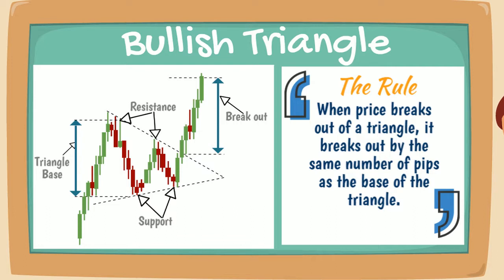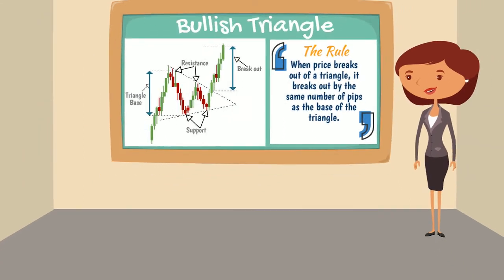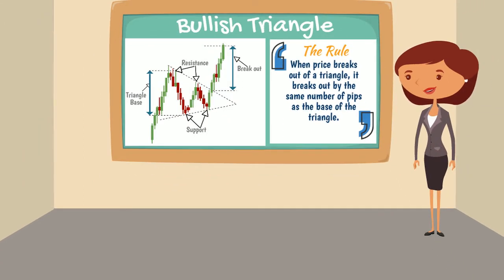A triangle is a continuation pattern, so a bullish symmetrical triangle would form during an uptrend when the market is taking a short break. It would then continue the uptrend when it breaks out of the triangle.